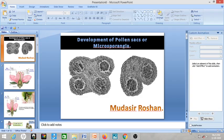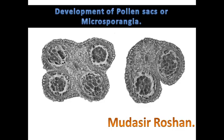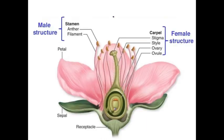Hello everyone, today we will be looking at our next topic which is development of pollen sacs or microsporangia. Before going to our main topic, let's have a look at the structure of a flower, which we have already done in our previous lecture, but let's recapitulate it quickly.